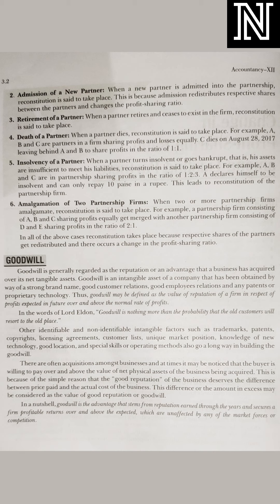So these things are clear now. Now: what is goodwill? Last year you studied that assets are of two types — tangible assets and intangible assets — and the main example of intangible assets is goodwill. So tell me: what is the meaning of goodwill? Goodwill means the reputation of a business — how much reputation the business has in the market. That is called goodwill.